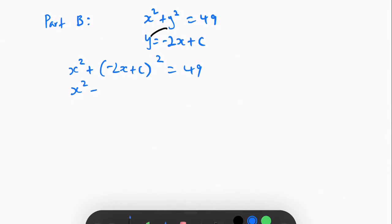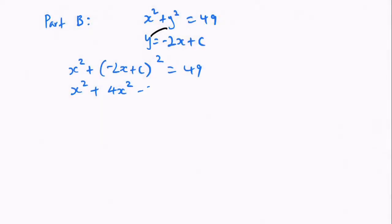x squared plus 4x squared because minus 2x times minus 2x gives you a positive 4x squared, minus 2x minus 2x plus c squared equals 49. If you expand that, I just haven't written that down in the expanded form or in the factorized form.